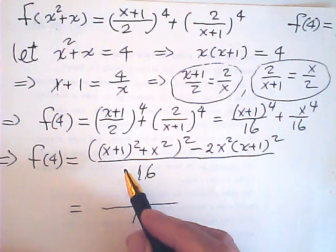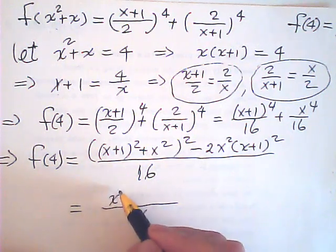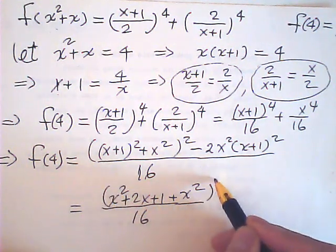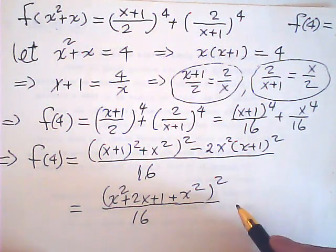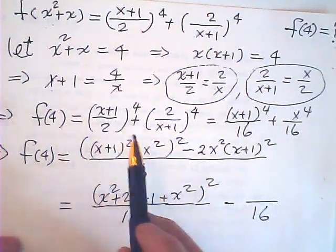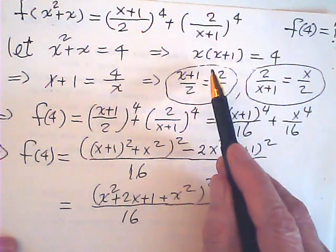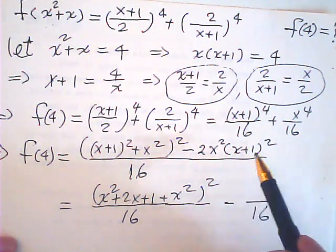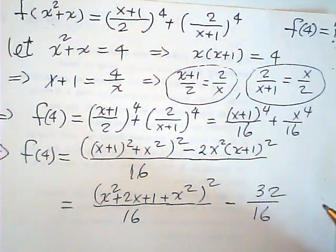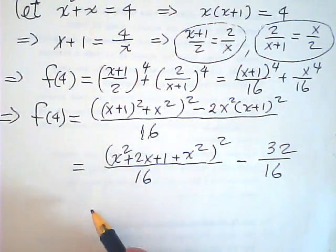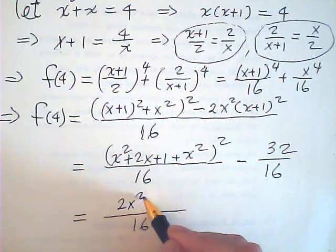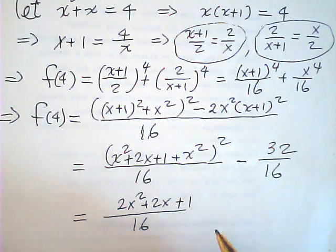This will be x square, x squared plus 2x plus 1 plus x square, x square minus 16. This is 4, x times (x plus 1) is 4. Therefore this is 16, so 32. This will be 4 squared. So this one is equal to 1 over 16.